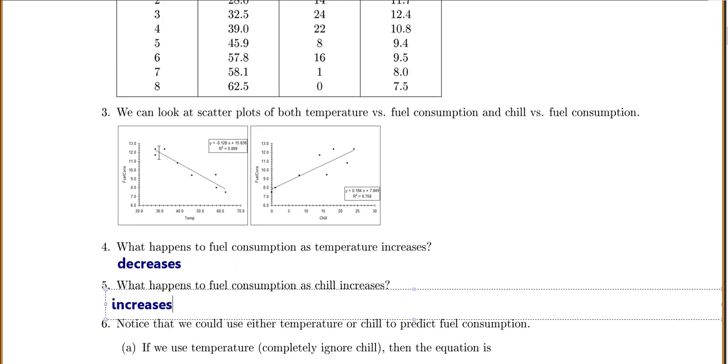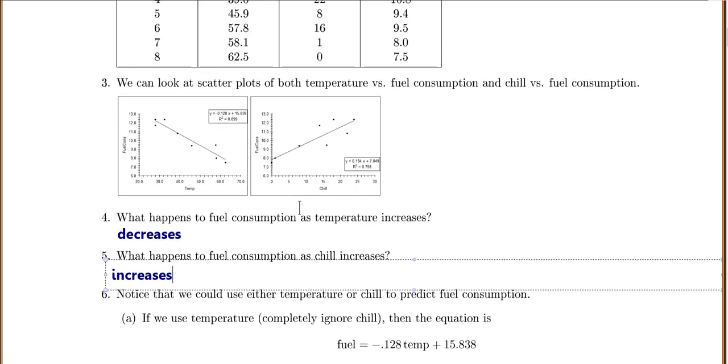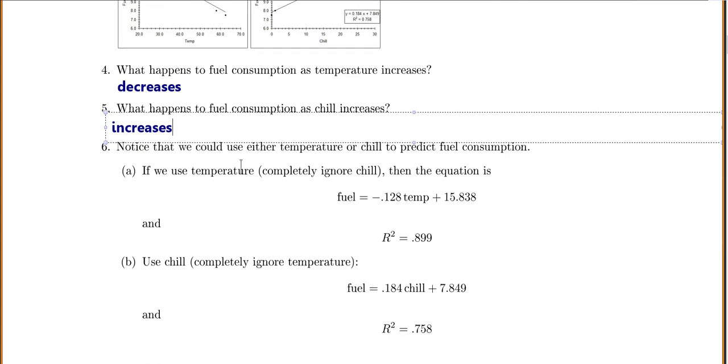Notice that we could use either temperature to predict fuel, and there's the equation of my line, or I could use chill to predict fuel, and there's the equation of that line. So if we were to use temperature, just completely ignoring chill, and just do our normal linear regression, then our equation would be fuel equals negative 0.128 temperature plus 15.838. That's what we did in our previous section.